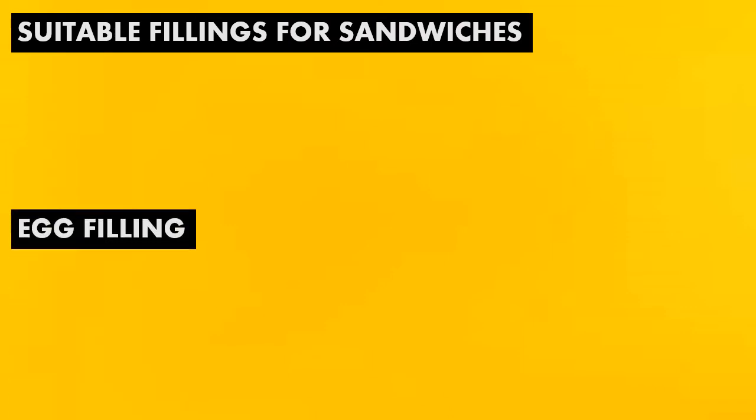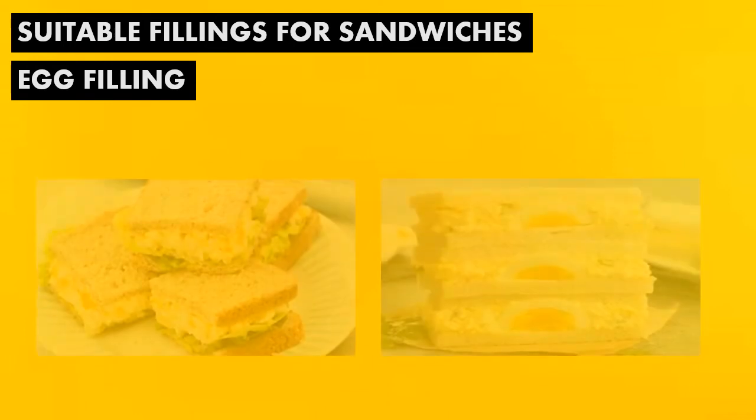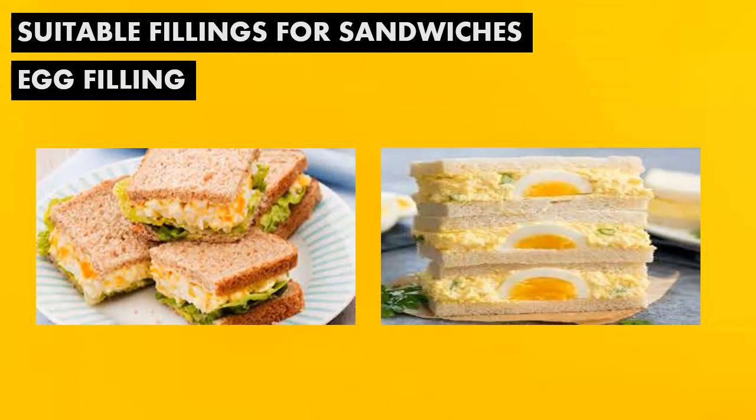Now, at this point, let's talk about the different suitable fillings for sandwiches. First, we have the egg filling. Combine one cup of chopped hard-boiled egg, two tablespoons of pickle relish, one tablespoon of finely chopped onions, three tablespoons of mayonnaise, and salt and pepper to taste.